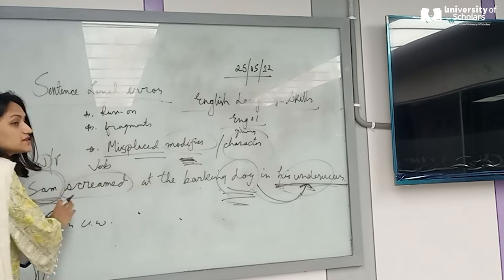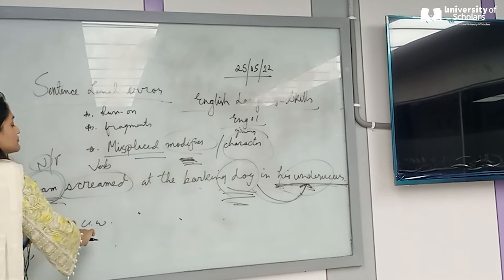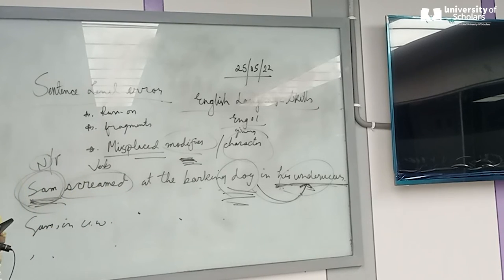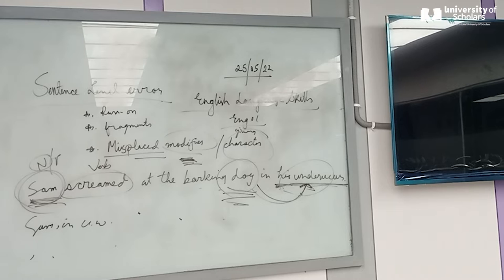No matter what, the modifier needs to be close to the thing or person it's modifying. The sentence structure of the original is still fine — 'Sam screamed at the barking dog in his underwear' is grammatically correct — but the meaning it conveys is wrong. A native speaker would notice that a dog can't wear underwear.